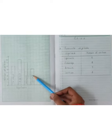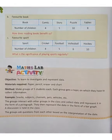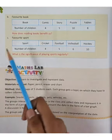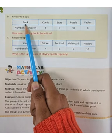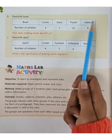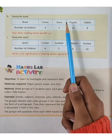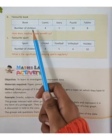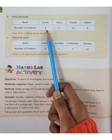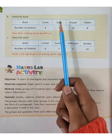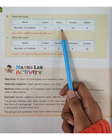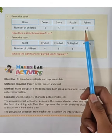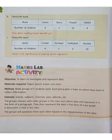Now, Part B — favorite books of children. The book names are: comic, story, puzzle, and fables. The number of children who like comic is 4, story is 5, puzzle is 10, and fables is 8. Now we will draw a bar graph based on this data.